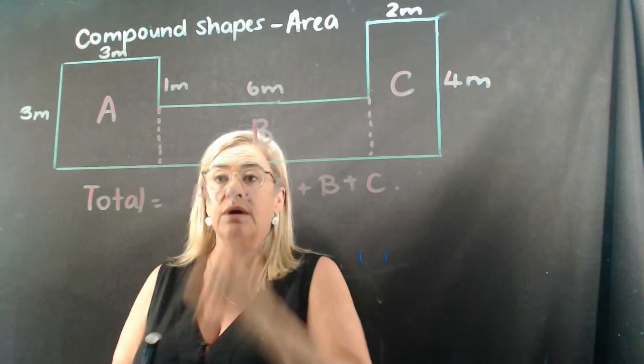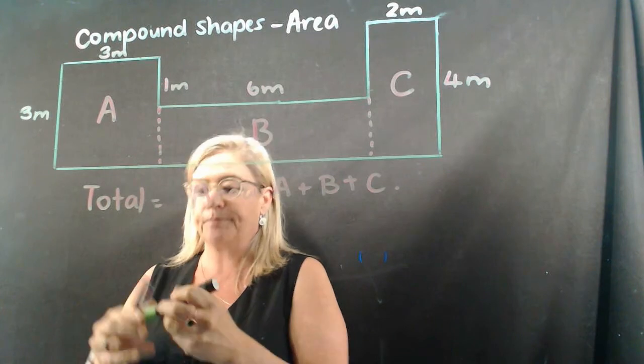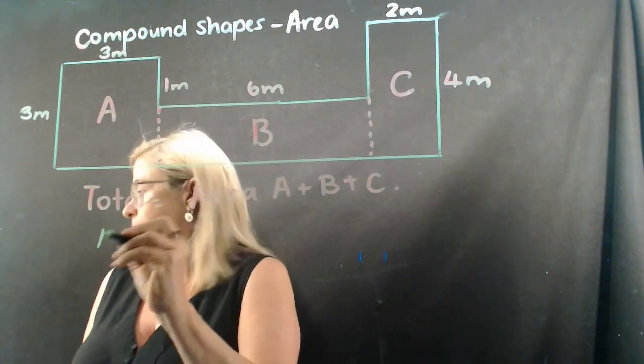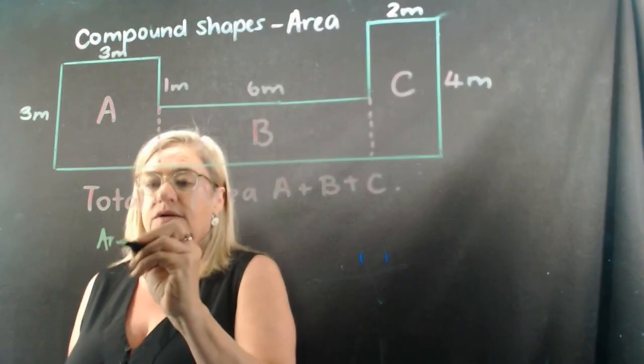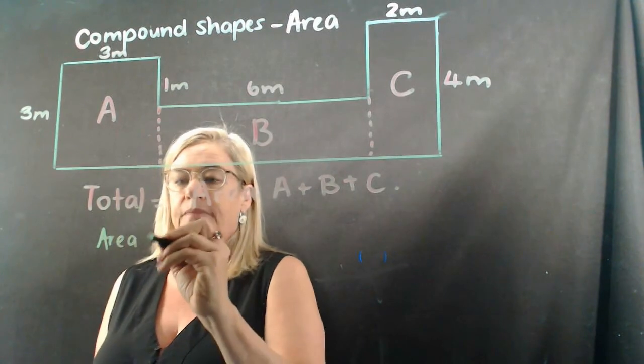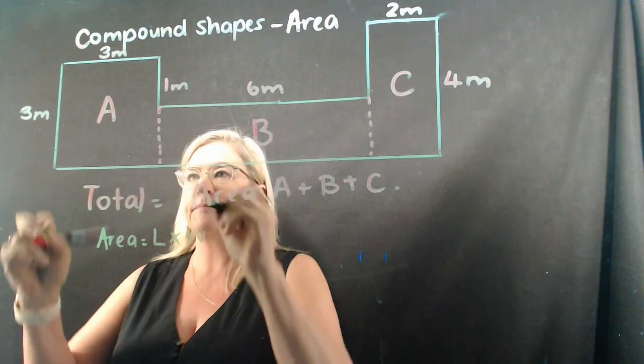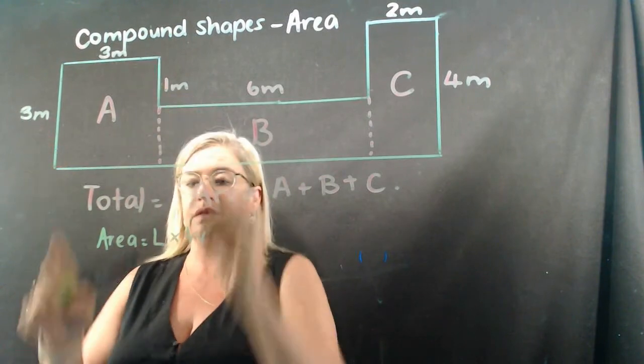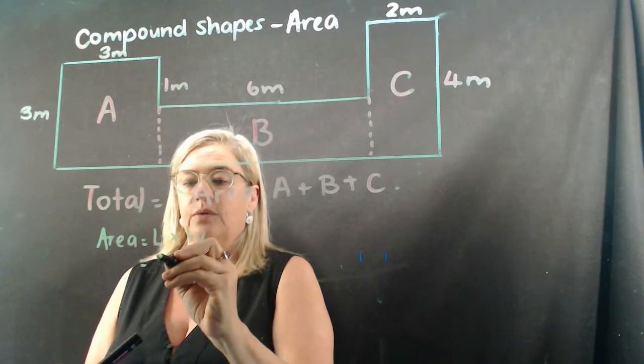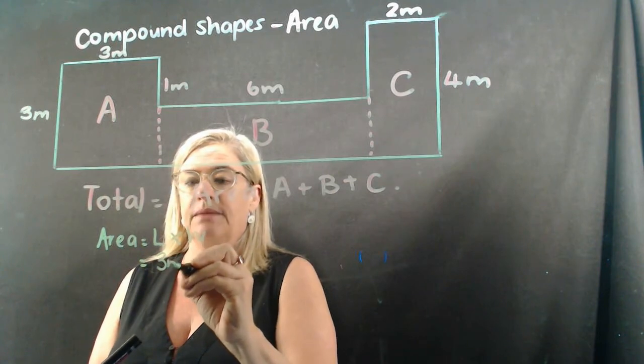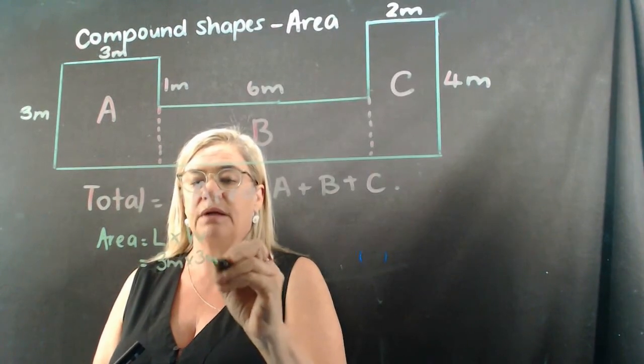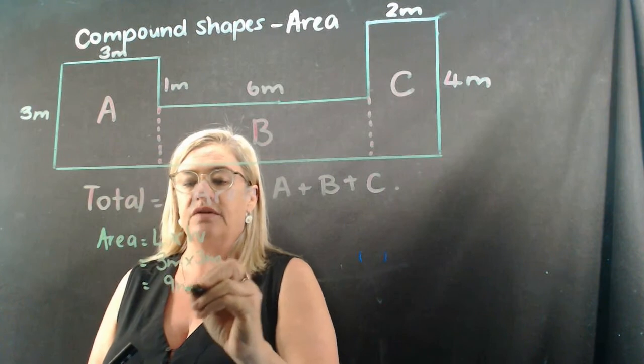But we need to know each area in turn. So area A is going to be using our formula equals length multiplied by width. The length and the width are the same here. So for area A, we've got three meters multiplied by three meters equals nine meters squared.